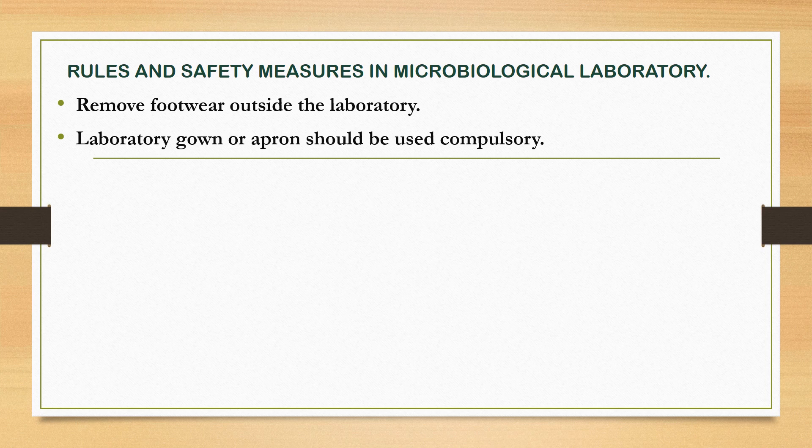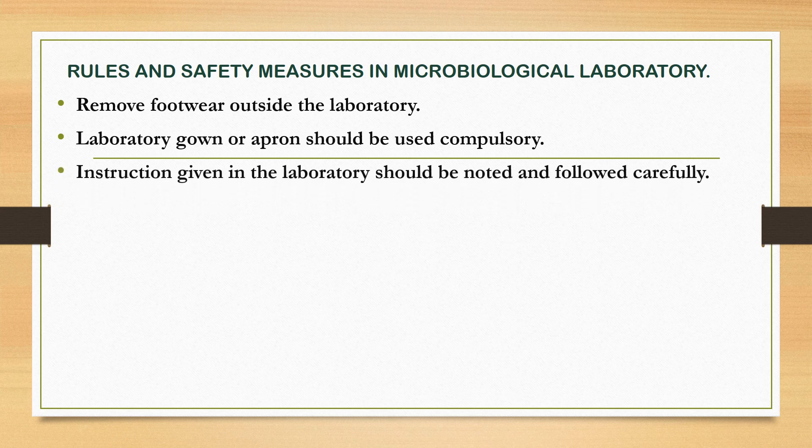Second, a laboratory gown or apron should be used compulsorily. As we know, dyes and chemicals are used in the laboratory, which can harm our skin as well as damage our clothes. So, laboratory gowns and aprons should be used compulsorily. The next rule is that instructions given in the laboratory should be noted and followed carefully.